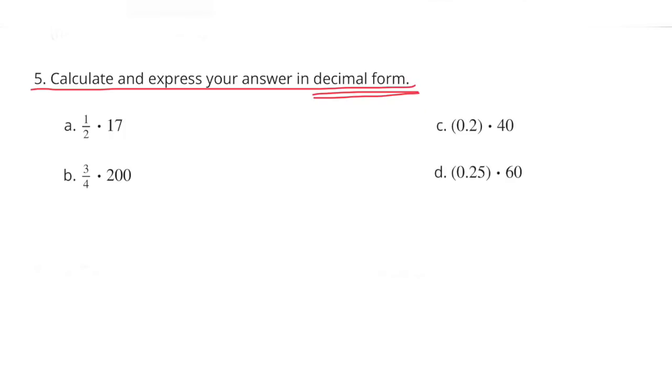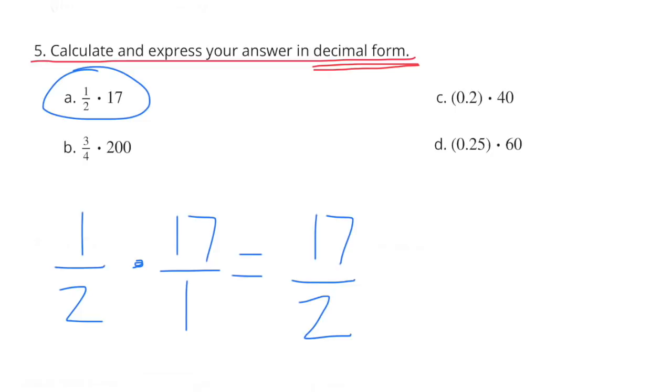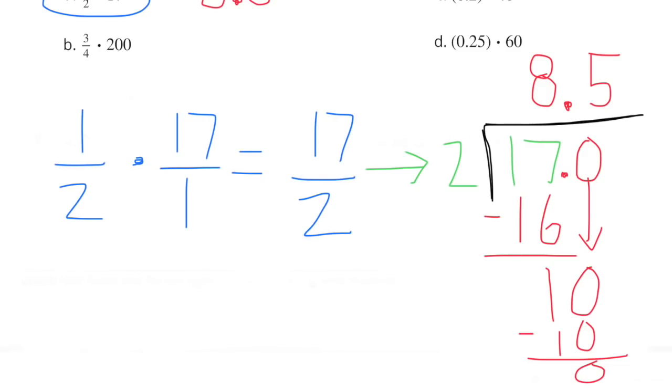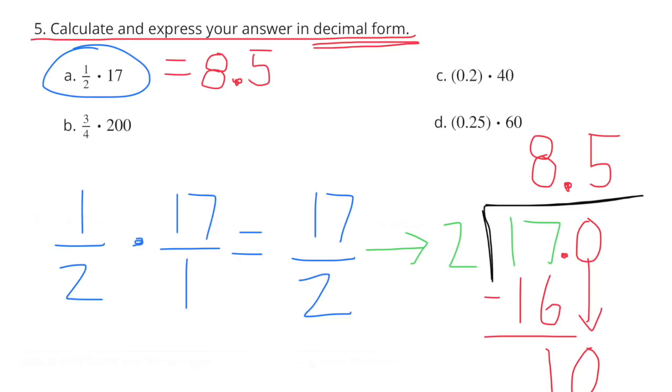Number five. Calculate and express your answers in decimal form. A. 1 half times 17. 1 half times 17 over 1 equals 17 halves. 17 halves means 17 divided by 2. And 17 divided by 2 is 8.5.